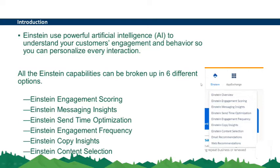The six different studios are: first, Einstein Engagement Scoring; second, Messaging Insights; third, Send Time Optimization; fourth, Einstein Frequency; fifth, Copy Insights; and the last one is Content Selection. We'll talk about all these six studios one by one.